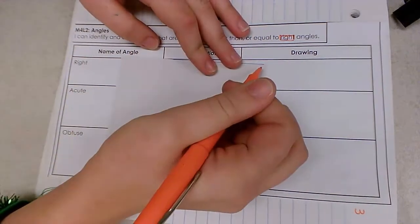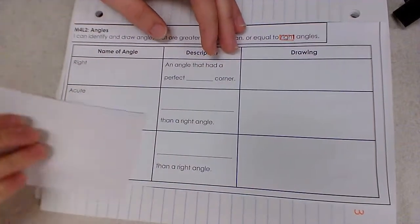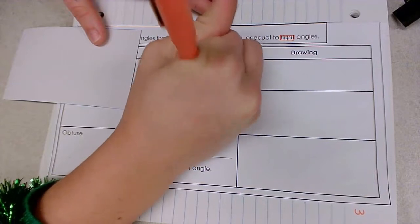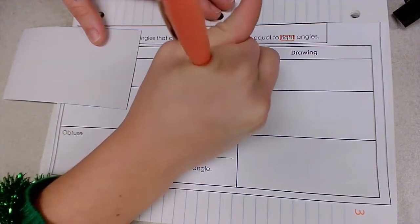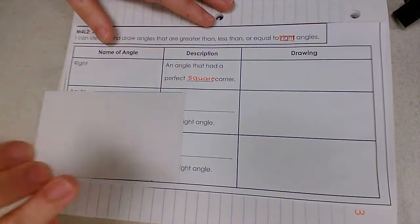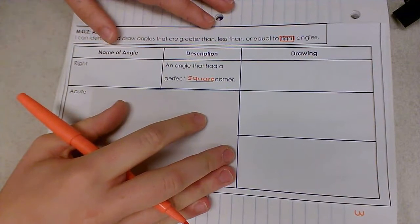One, two, three, four. Right angles are an angle that have a perfect square corner. We call it a square corner because we can line it up with the corner of a square and it fits perfectly.